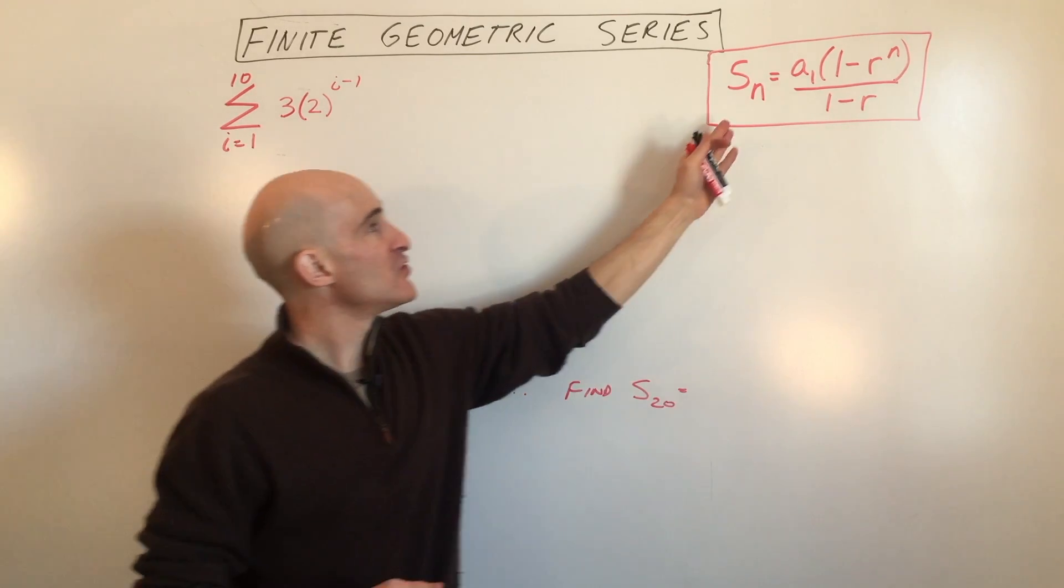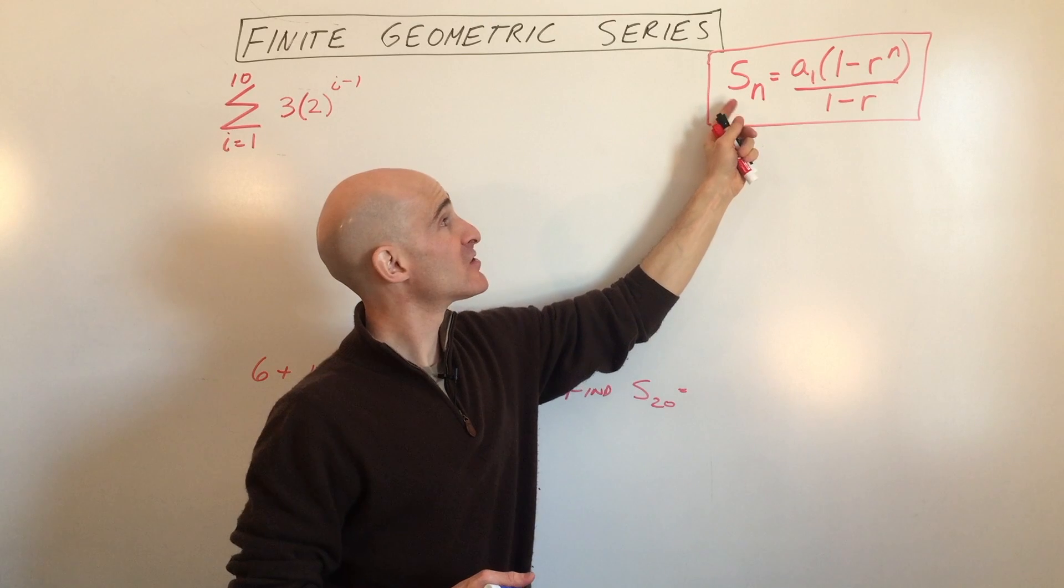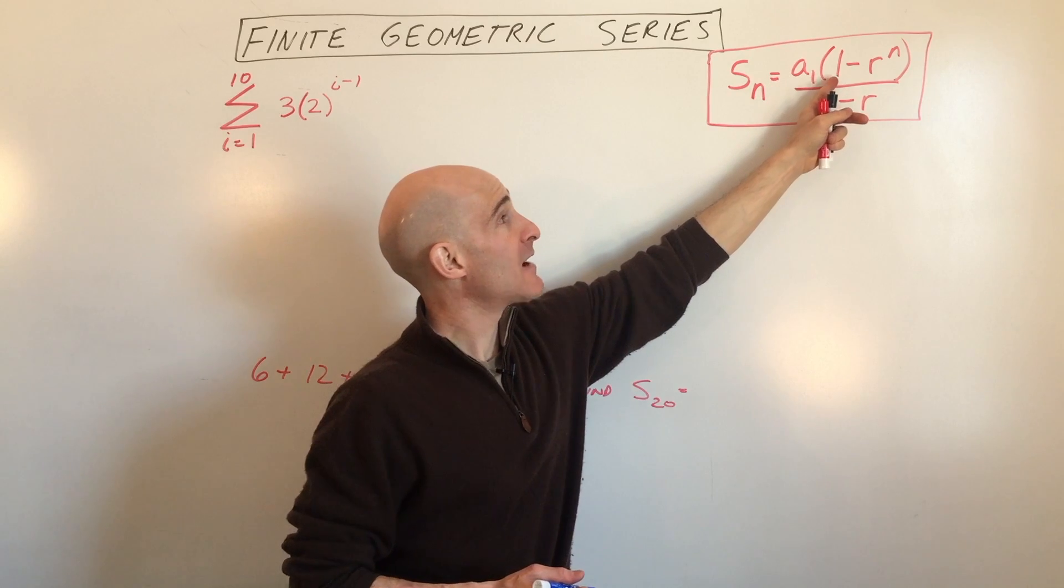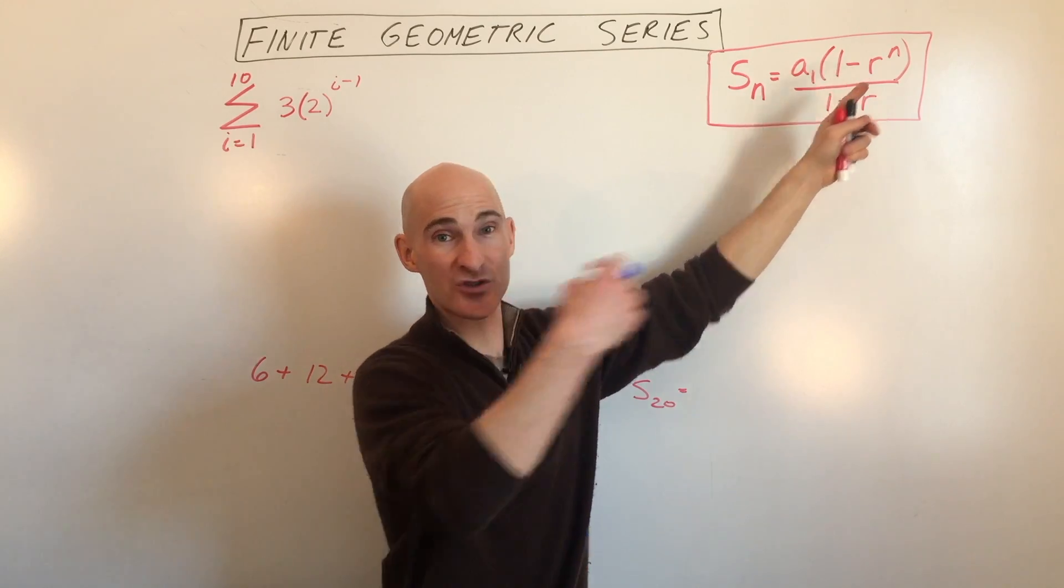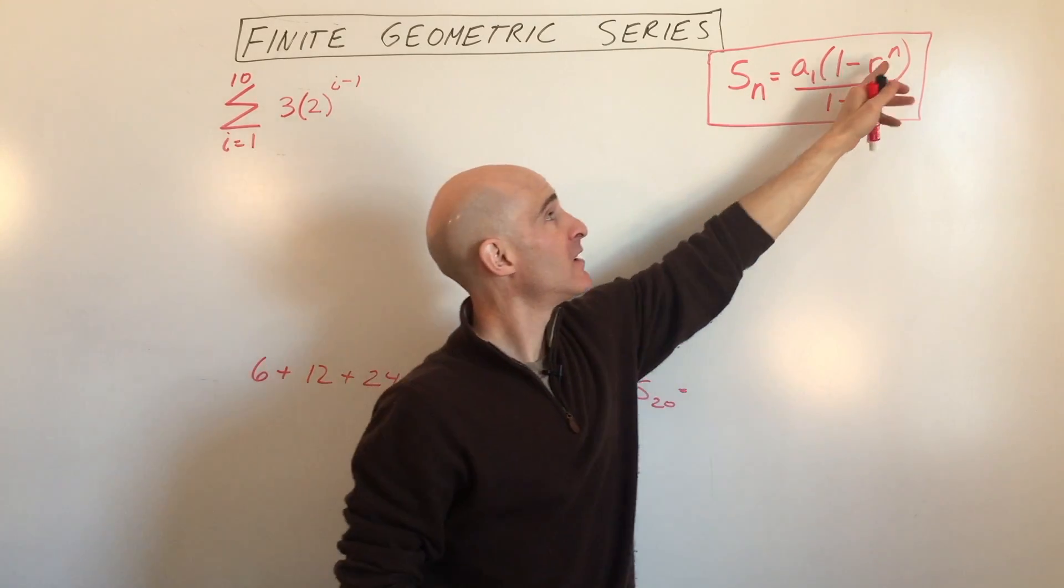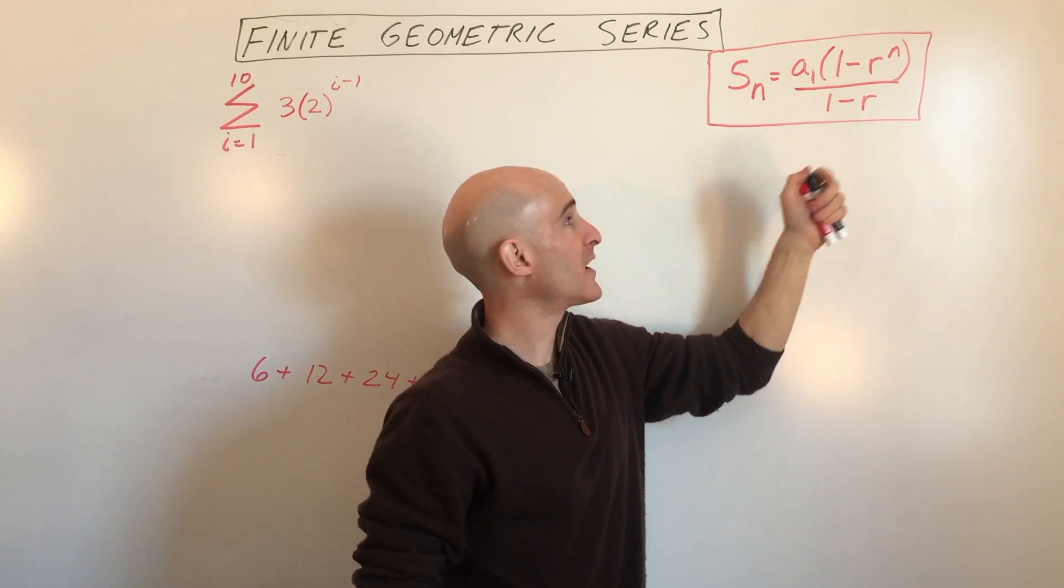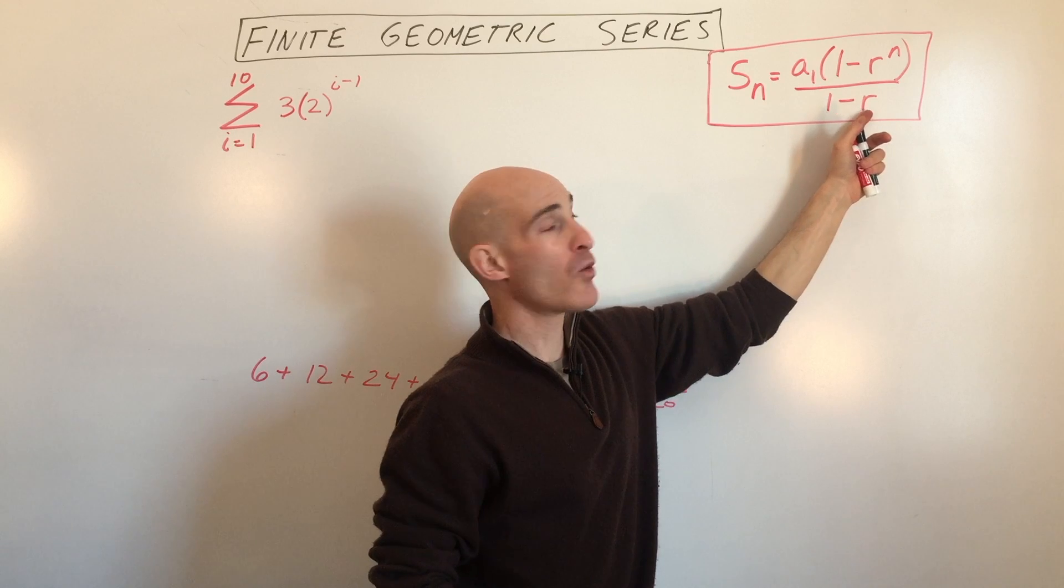So the form that we're going to be using here is S sub n, so the sum of the first n terms, equals A sub 1, which is the first term, times 1 minus the ratio, that's what you're multiplying by to get to the next term, raised to the nth power, which is however many terms you have. If it's 20, n will be 20, all divided by 1 minus r.